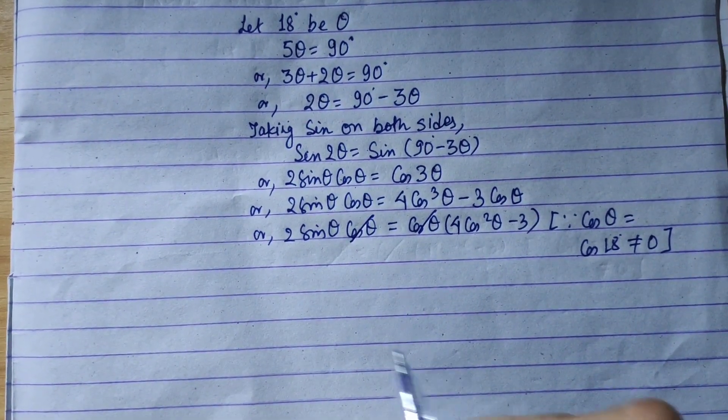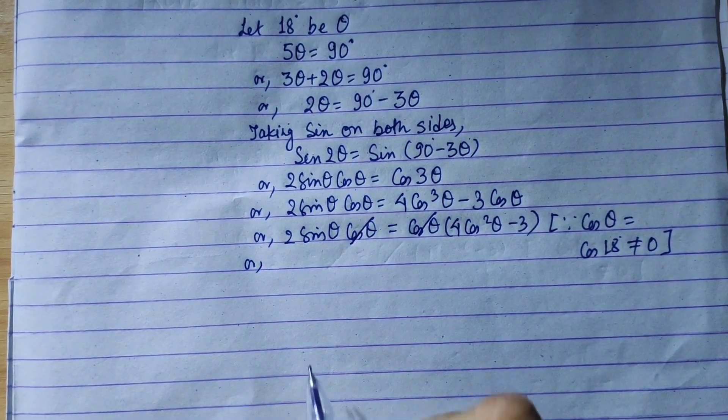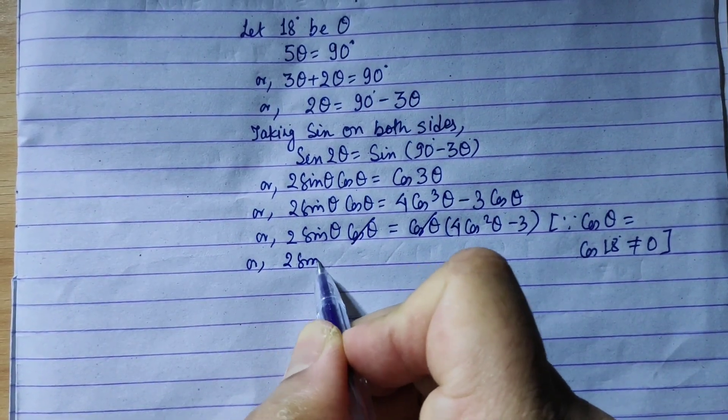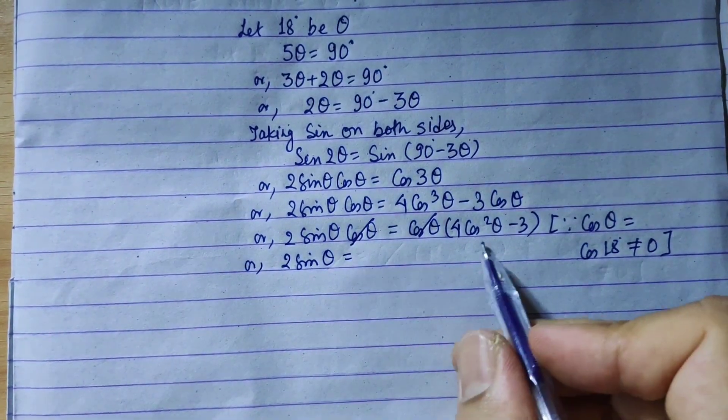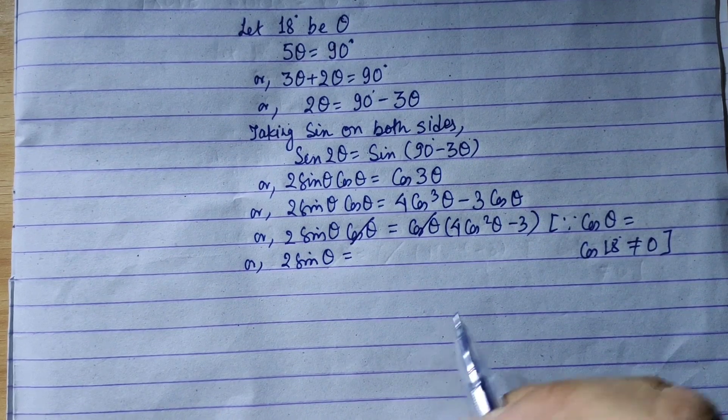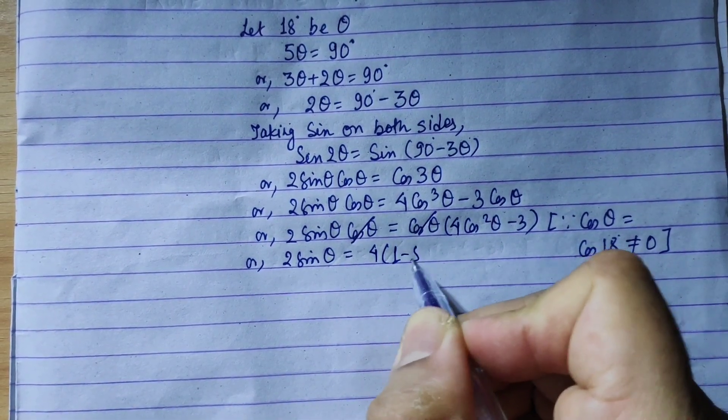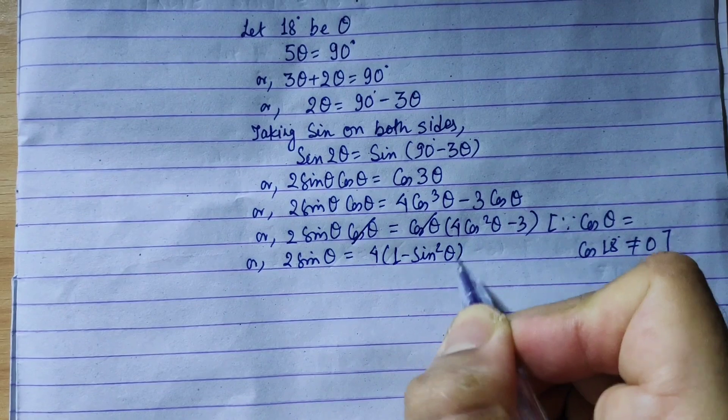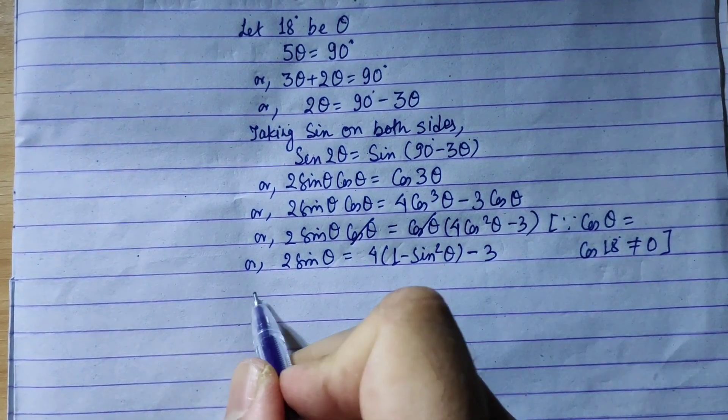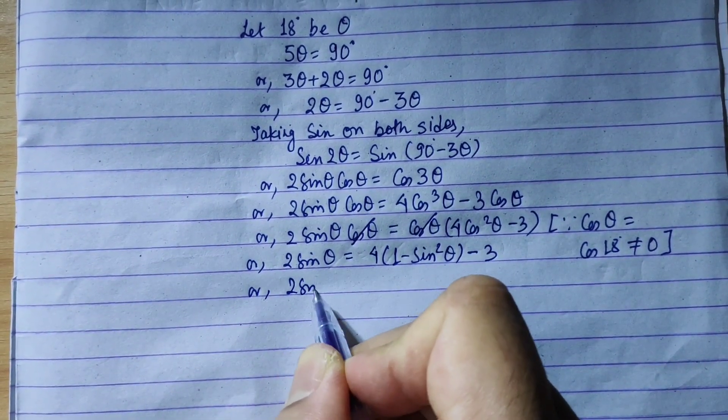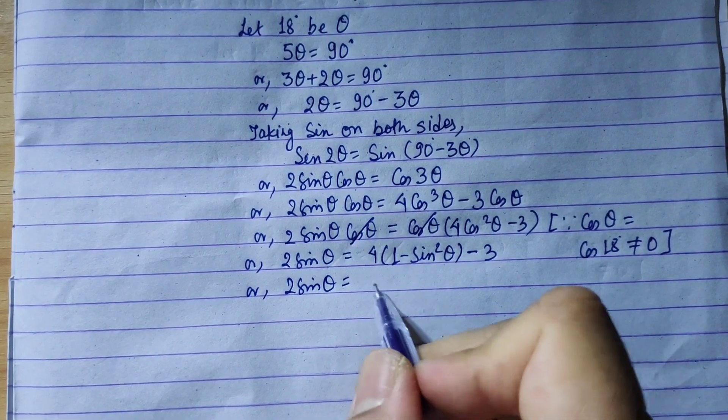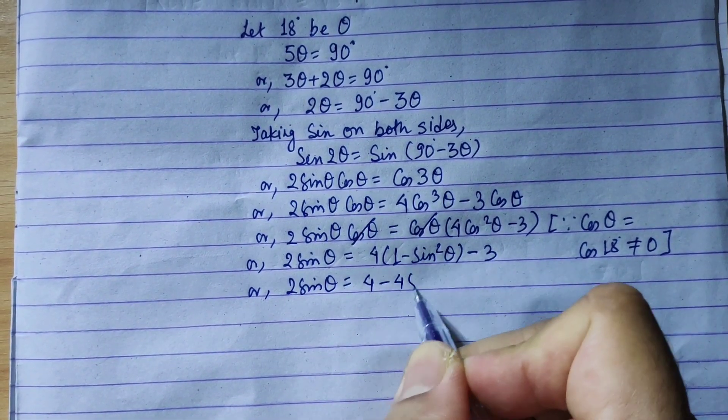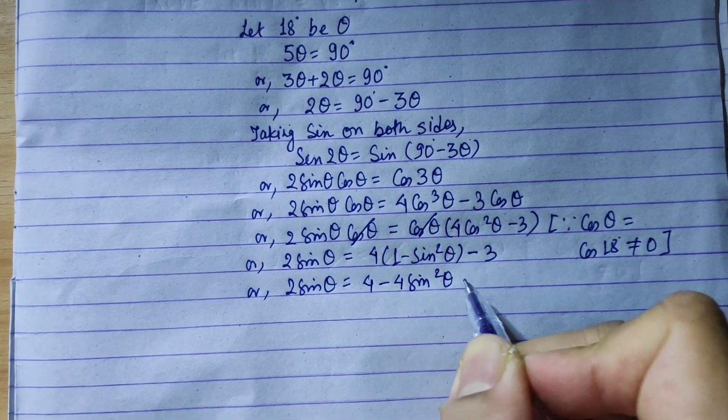So 2 sin theta. For cos theta we use sin, so we have 4 bracket 1 minus sin square theta minus 3. Or 2 sin theta is equal to 4 minus 4 sin square theta minus 3.